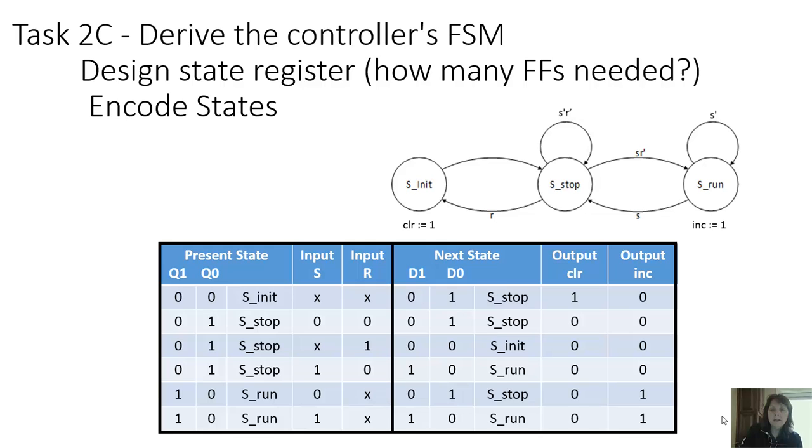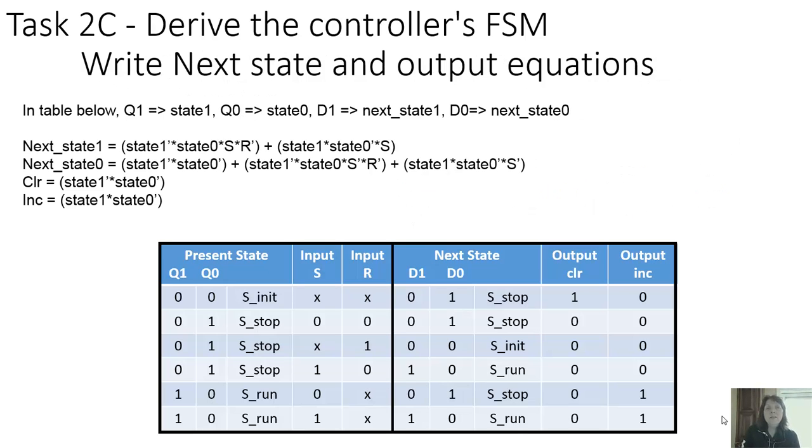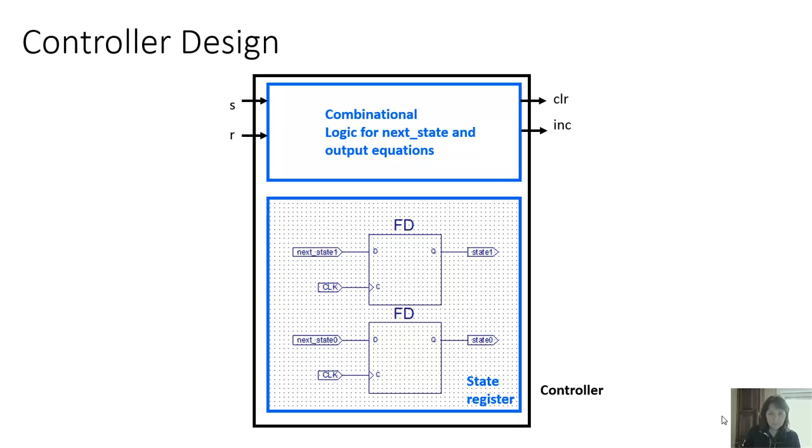So that maps to the schematic that I used in the ISE, which we can see here. I have my state register defined using those two flip-flops. I can use the combinational logic equations that I've just derived to implement the combinational logic for clear increment as well as next_state1 and next_state0. So do consider using MUXs rather than just a two-level AND-OR, strictly your choice. You can do it either way.